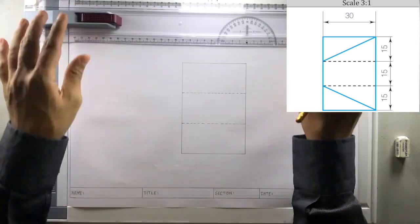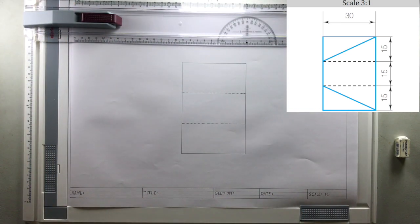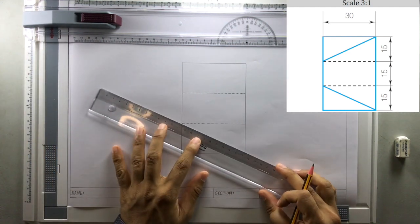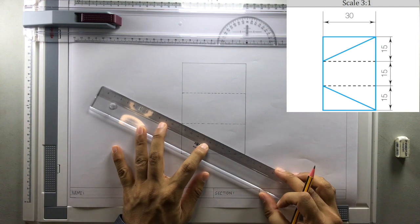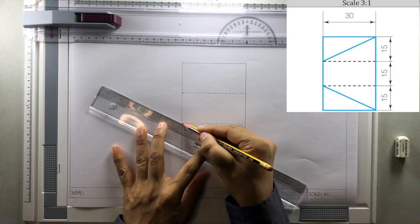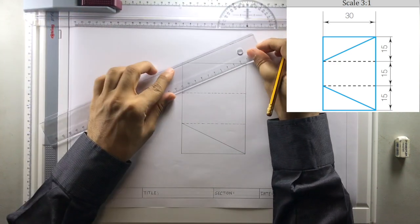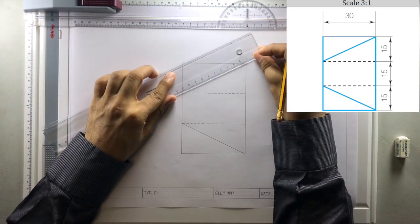Now, let's draw the inclined lines. We have inclined lines from here to here. Likewise, and then the next inclined lines. The next inclined line is from here.